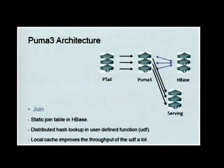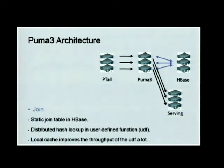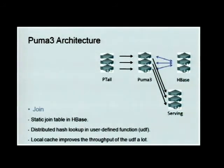Puma3 also supports simple joins. We store a static table in HBase, and when Puma3 processes a log line, we do a lookup inside HBase, get the value, and use that value as one of the columns in the log line. We found that a local cache in each Puma3 process actually improves the throughput of the UDF — the user-defined function — a lot.